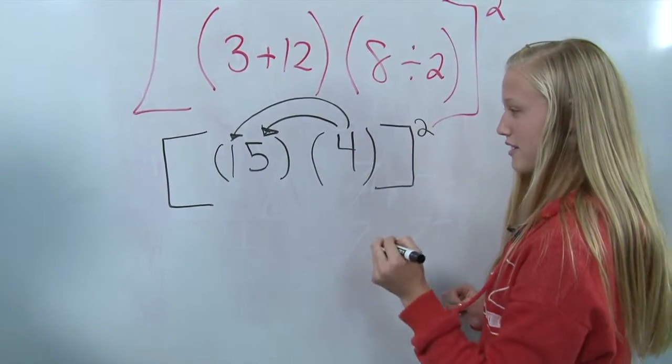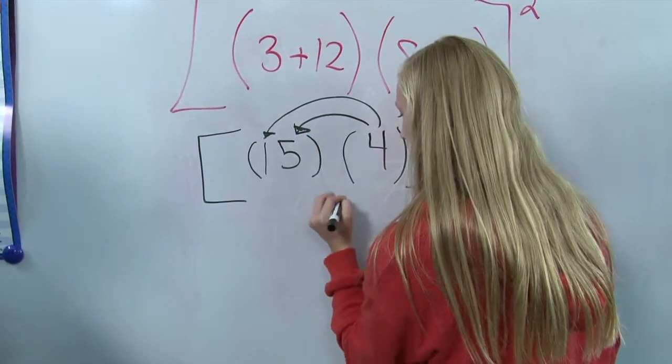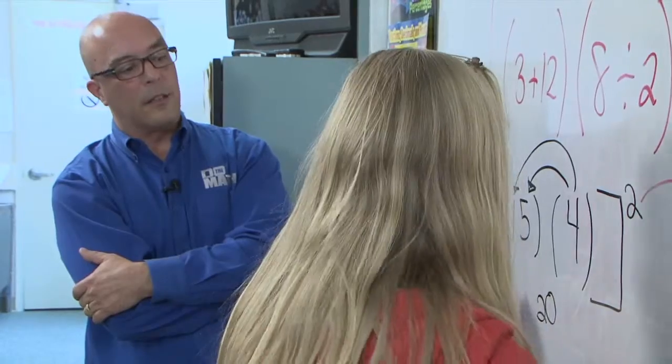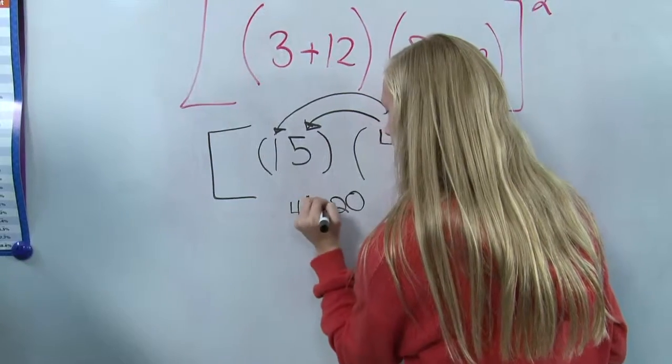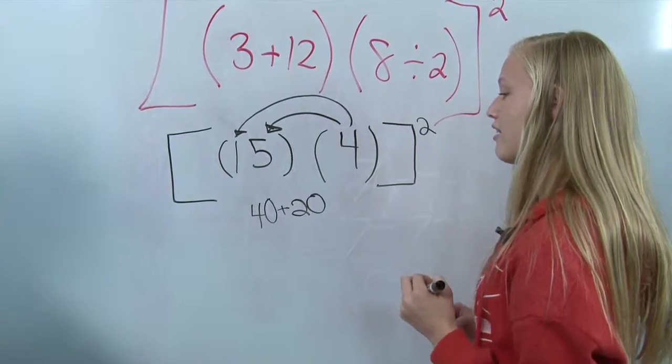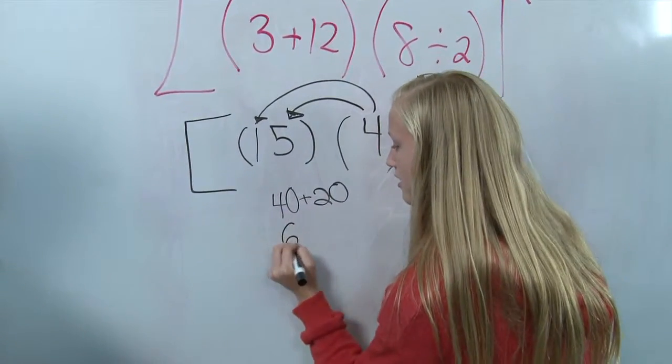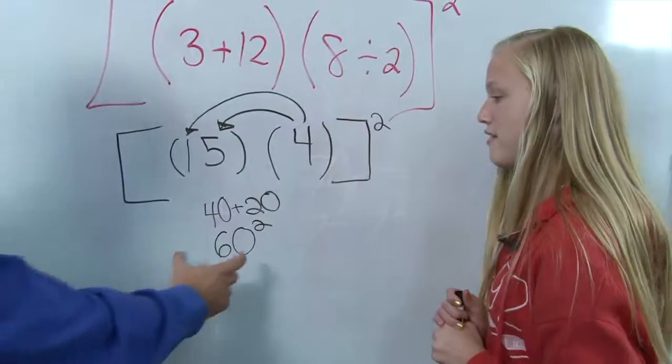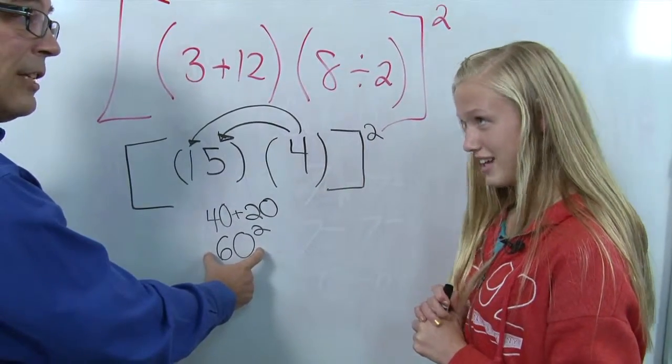So 4 times 5 is 20, and then 4 times 10 is 40. And then you add those two together to get 60. Okay. And then that would be 60 squared. Right.